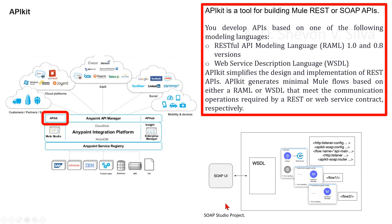The SOAP UI interacts with WSDL. You can see the API main, the SOAP router, and the APIkit SOAP kit dash config. This is flow one and flow two. You can see http:listener-config, APIkit SOAP:config, and flow name API main.